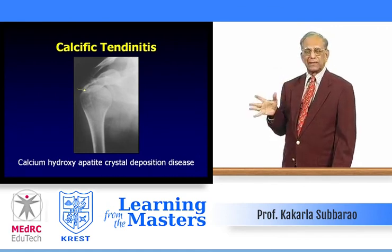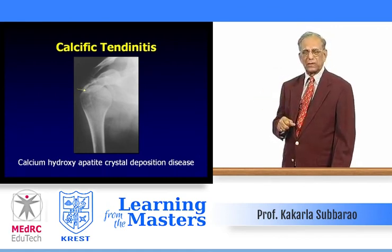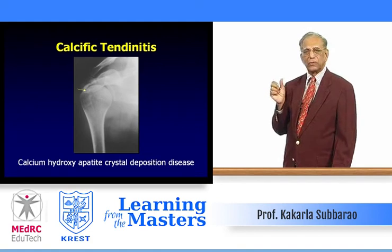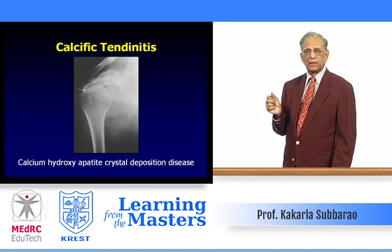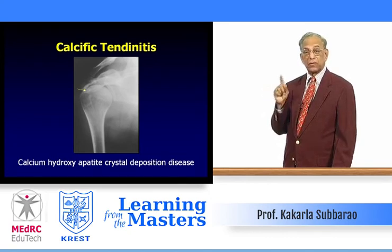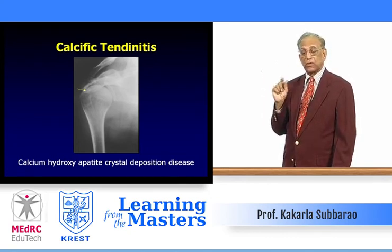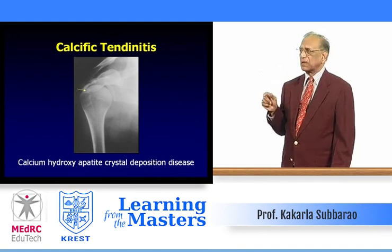The capsule may be calcified with several loose bodies in the optical bursa, extending along the bursa and tendon — wherever there is synovium, synovial calcifications may be seen. Another entity is peritendinitis calcarea, also called calcific tendinitis, due to deposition of calcium hydroxyapatite crystals — not calcium pyrophosphate crystals as in pseudogout. Calcium hydroxyapatite crystals are common at the shoulder tendinous attachments, but may occur anywhere there is a tendon or bursa.